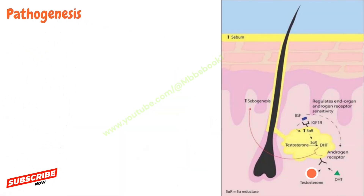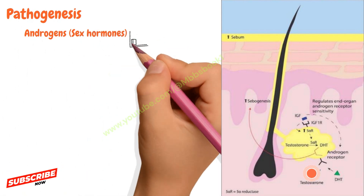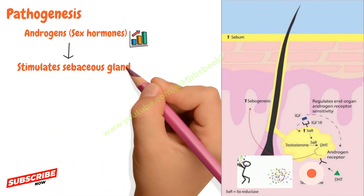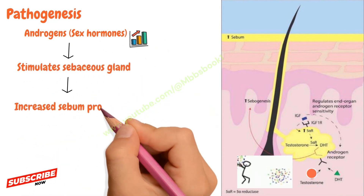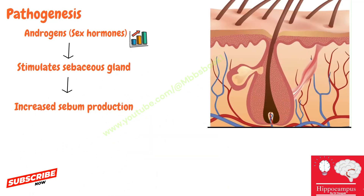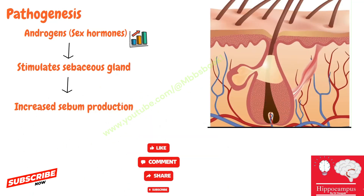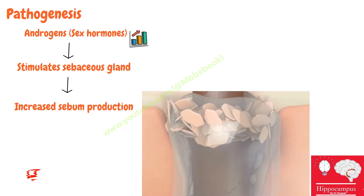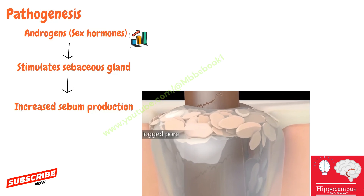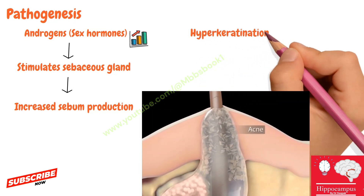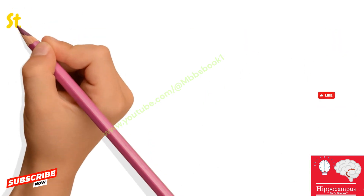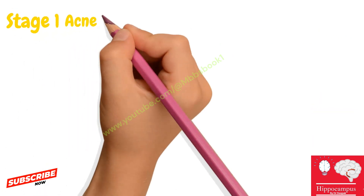Regarding pathogenesis: at puberty there is a surge in androgen production, which stimulates the sebaceous gland, increasing sebum production. In some people the outflow is blocked, initiating acne formation. This block is formed by hyperkeratinization at the infundibulum — the formation of a keratin plug. This is stage one acne vulgaris.